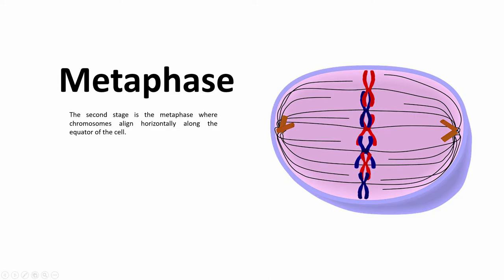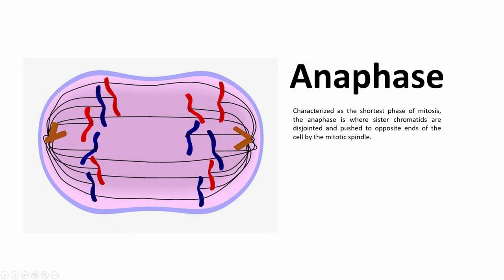After metaphase is anaphase. Characterized as the shortest phase of mitosis, anaphase is where sister chromatids are disjointed and pushed to opposite ends of the cell by the mitotic spindle.